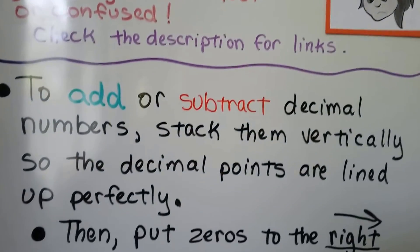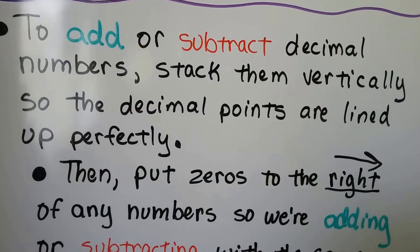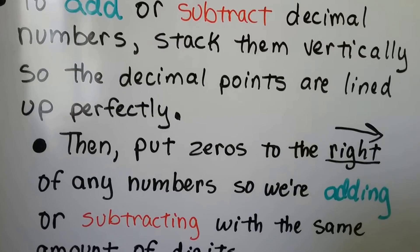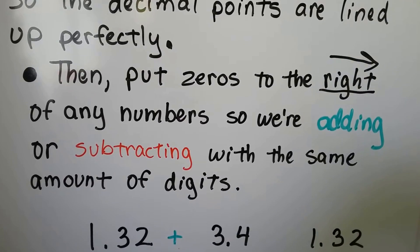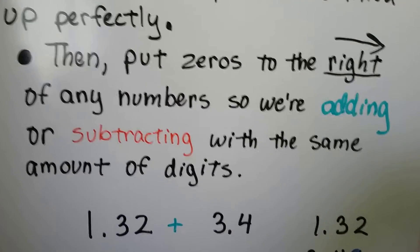To add or subtract decimal numbers, stack them vertically so the decimal points are lined up perfectly. Then put zeros to the right of any numbers so we're adding or subtracting with the same amount of digits.